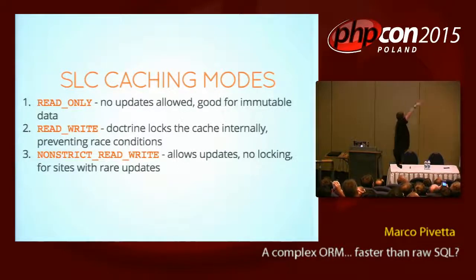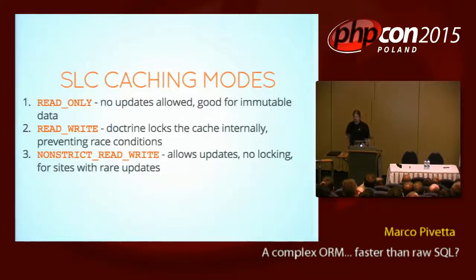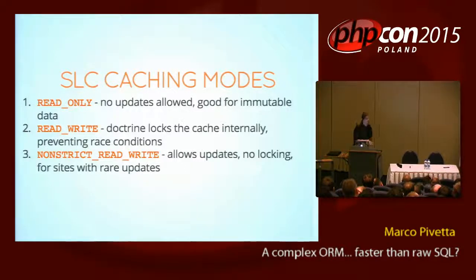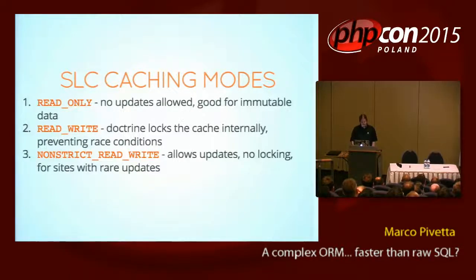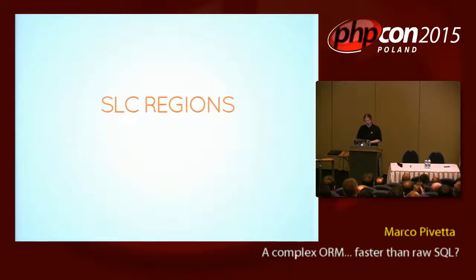You can cache in different modes. First one is read-only — this means anything that is overwritten in your cache will just throw an exception. You can't overwrite it. It's perfect for immutable data. Read-write is pretty much emulating the transaction system of the DB — we are locking the records, so it may be very slow, but it works really well for systems where you don't overwrite data very often. And then non-strict read-write, which pretty much means this is wild west — do whatever you want.